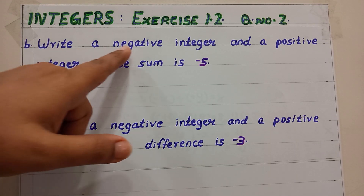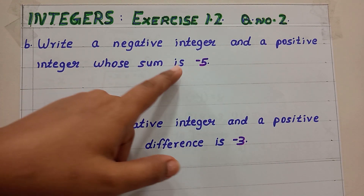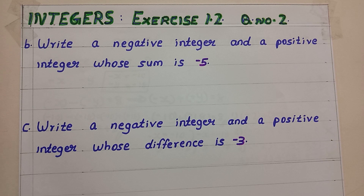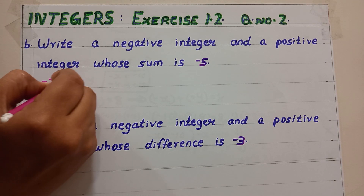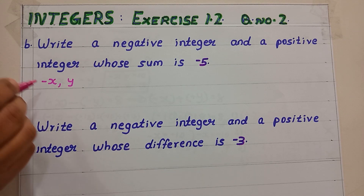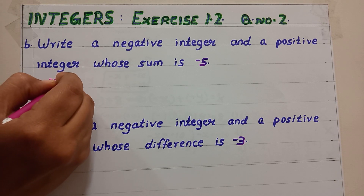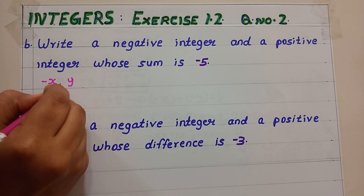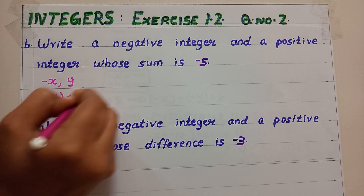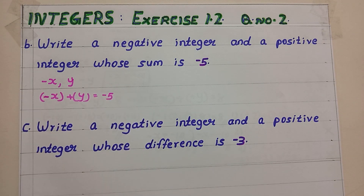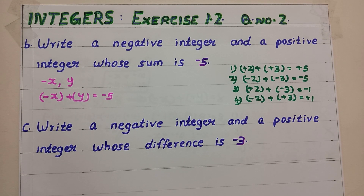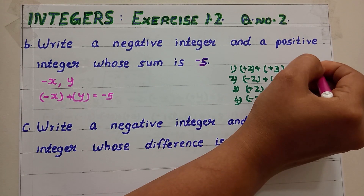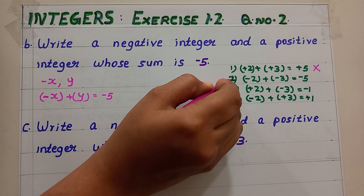Part B: write a negative integer and a positive integer whose sum is negative 5. We need to find minus x and y such that minus x plus y equals minus 5. Looking at the four cases, our answer is negative so we can avoid case 1. We can consider case 2 or case 3, and avoid case 4 since the answer must be negative.